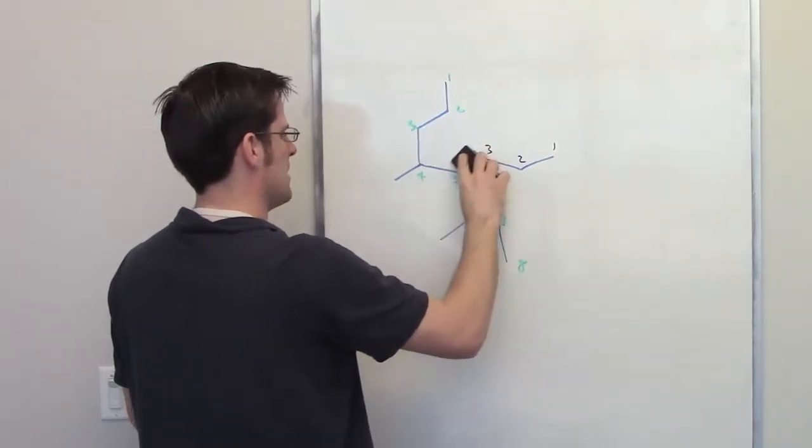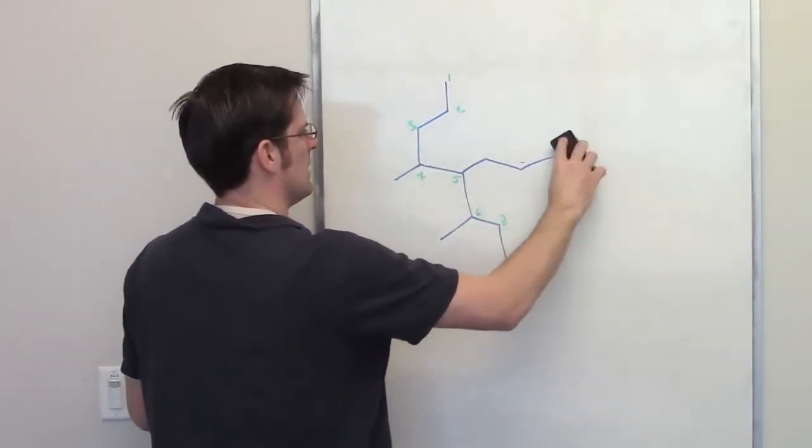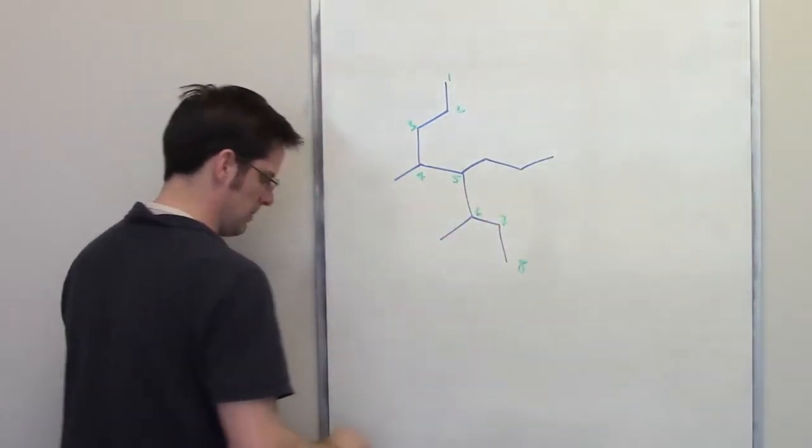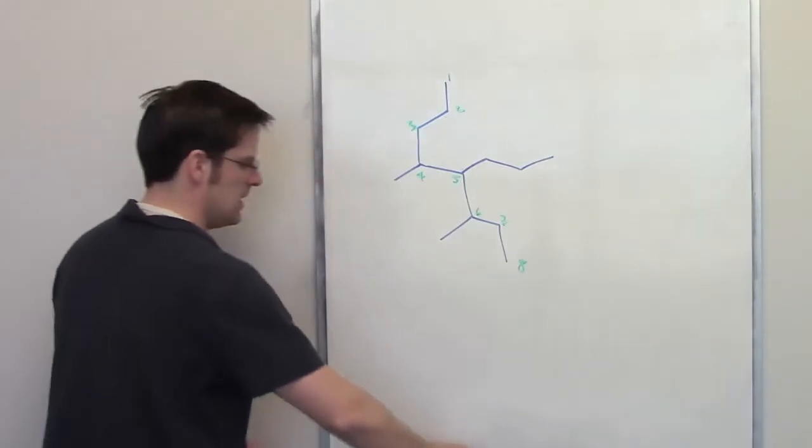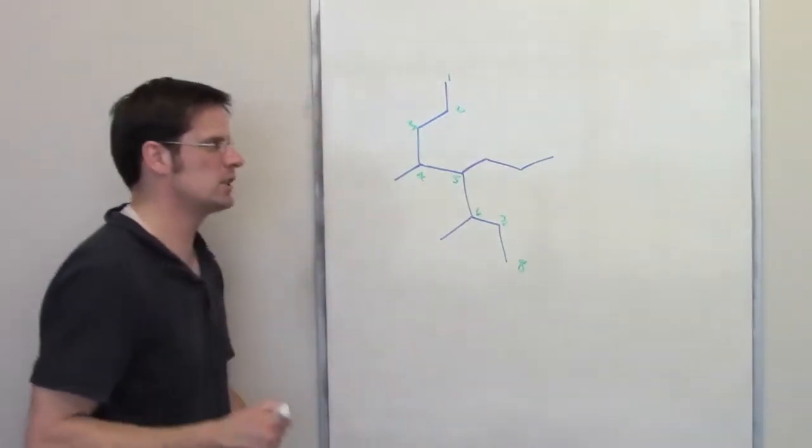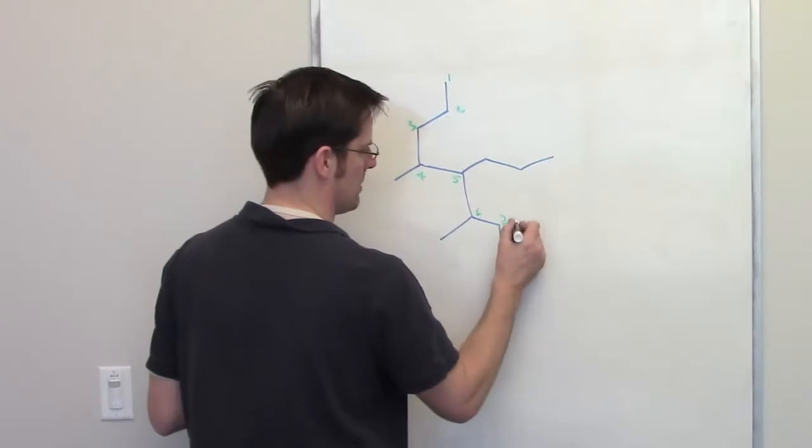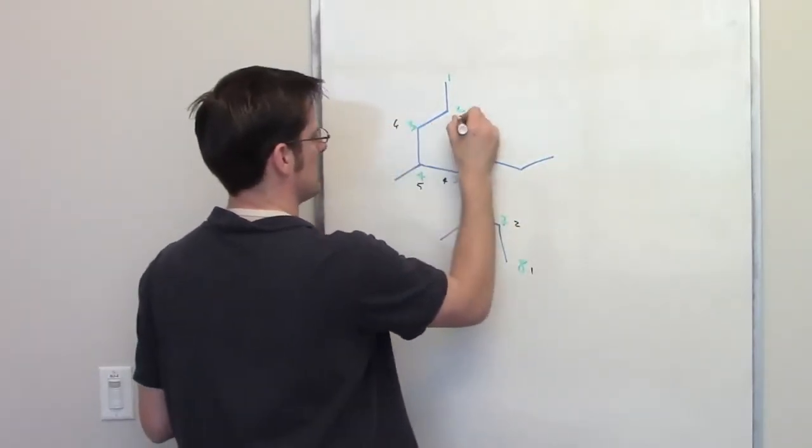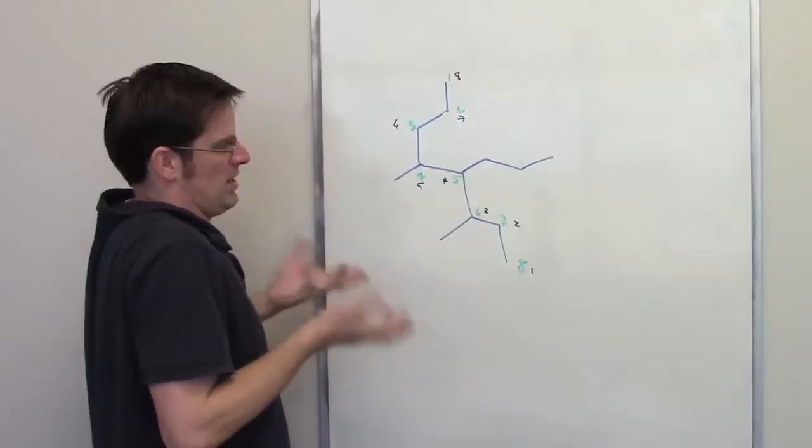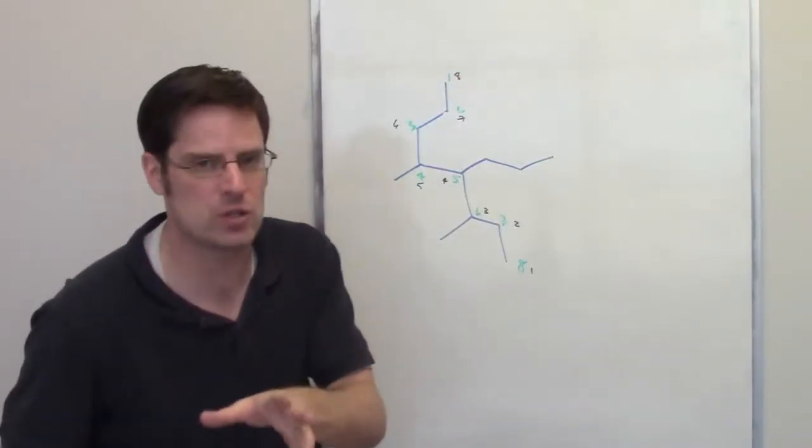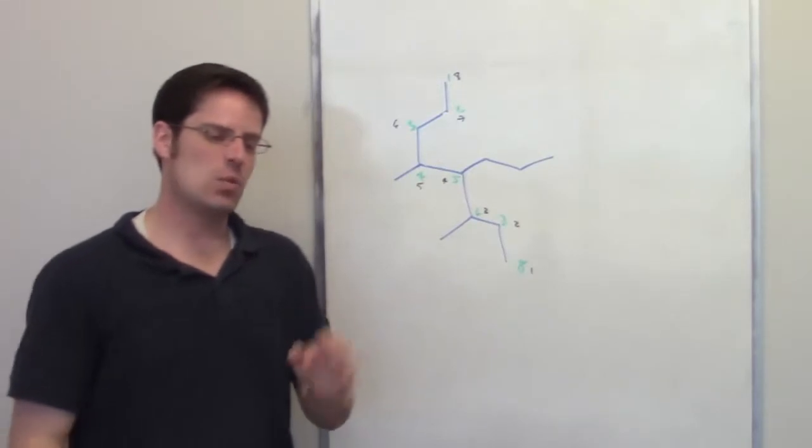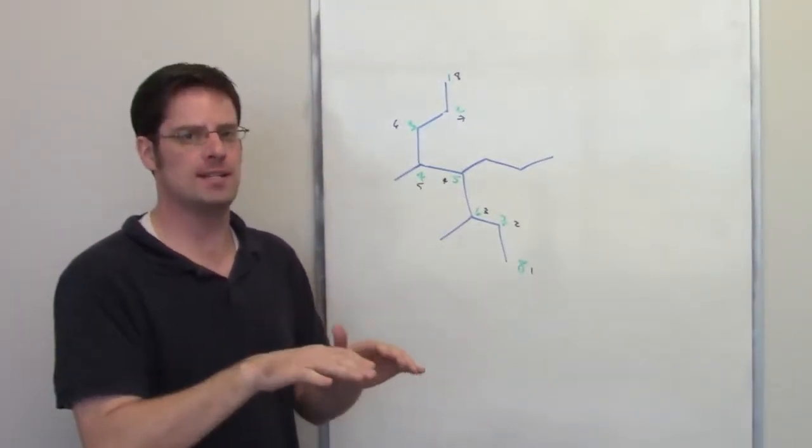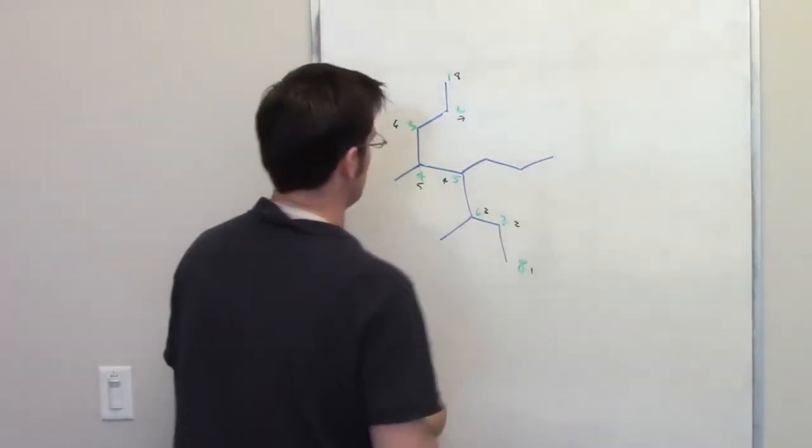Hopefully you're okay with that, because if I were considering this entire appendage down here to be a substituent, it would be pretty complicated to name a substituent to do. The next question we have to address then is direction. Because I could just as easily number from the bottom up. One, two, three, four, five, six, seven, eight. So one of those is going to be right, one of them is going to be wrong. Which one is right, which one is wrong? The one that's right is the one that has the smaller number at the first point of difference.